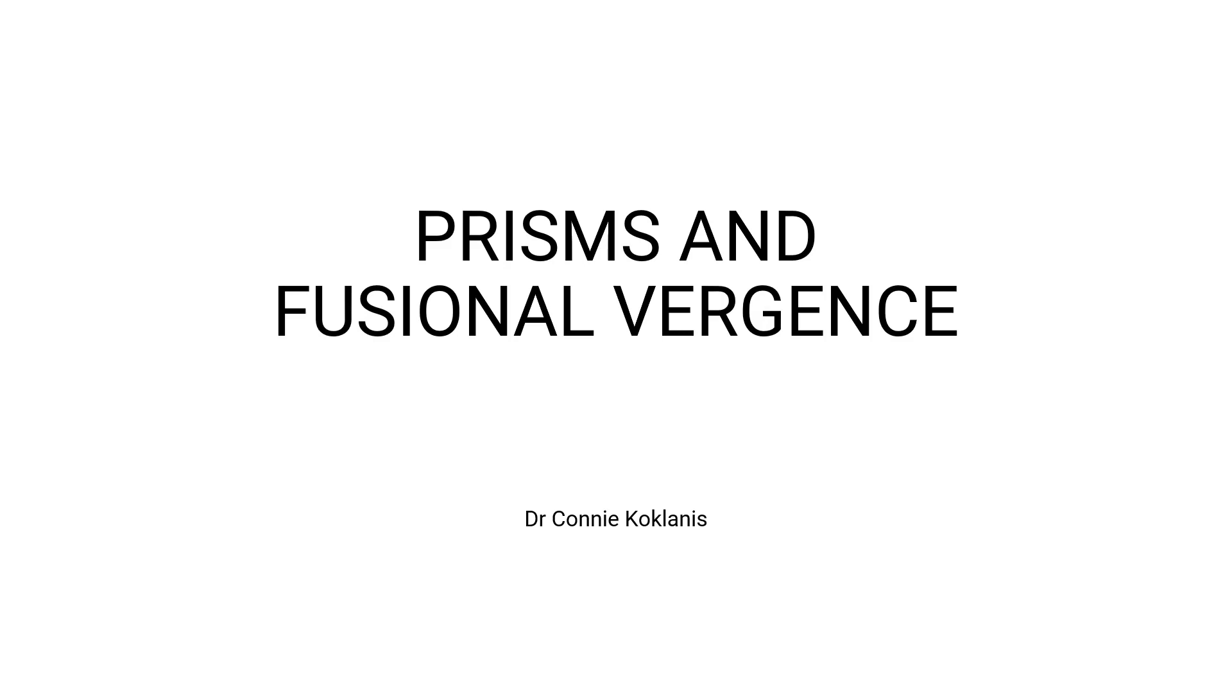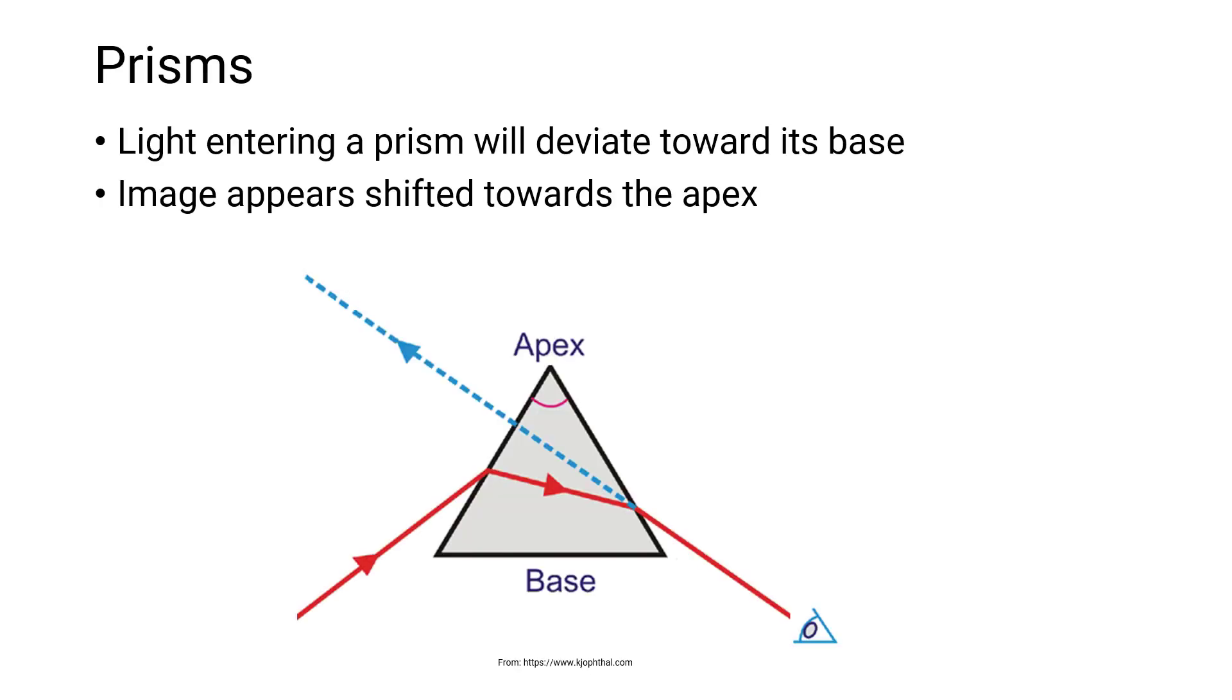In this video, we will discuss how we use prisms to assess fusion convergences. To do this, we first need to go over what happens to light when it passes through a prism. You should recall that when light enters a prism, it will deviate towards its base.